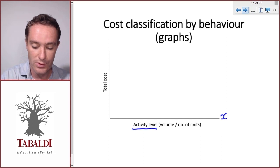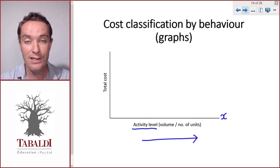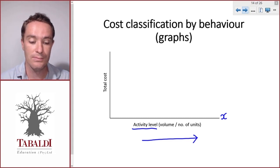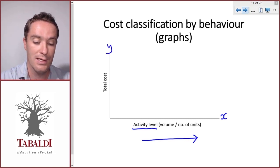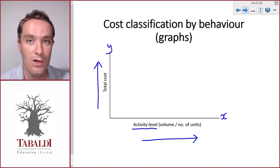As we move to the right, that means an increase in the number of units. And then the Y axis, that is the vertical axis, that is our total cost. And then as we move upwards, we increase our costs.